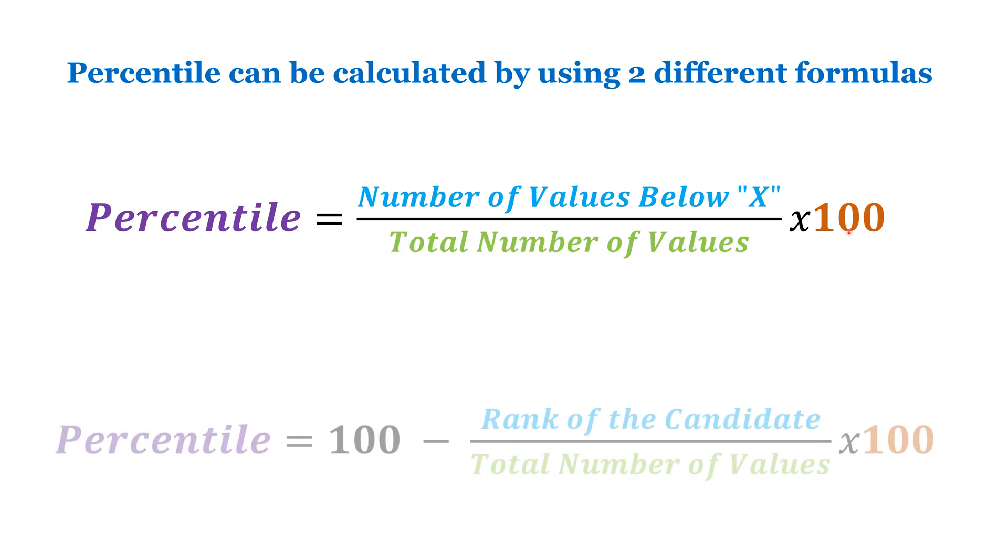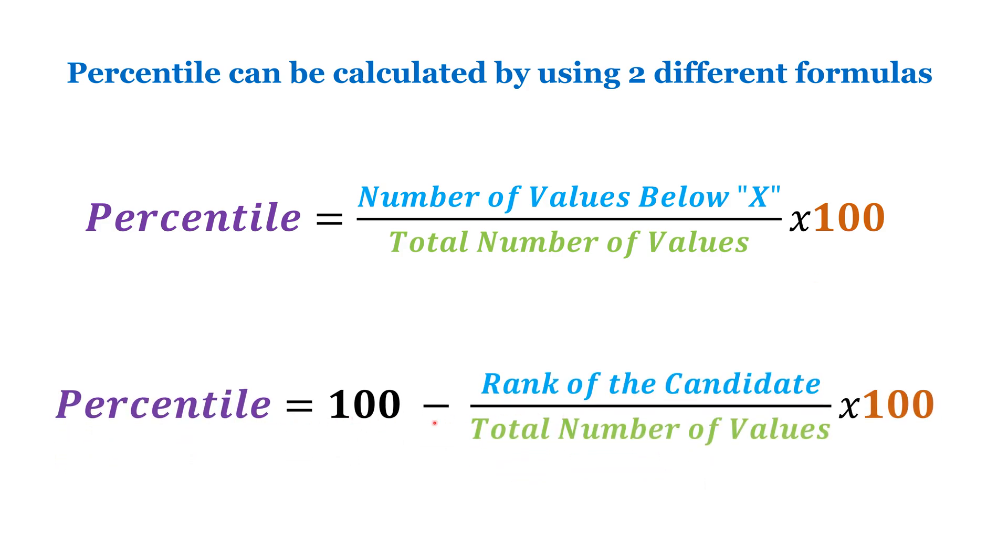The second formula is: percentile equals 100 minus rank of the candidate divided by total number of values into 100. As I said earlier, whatever formula you are using, the percentile you are getting is going to be the same.